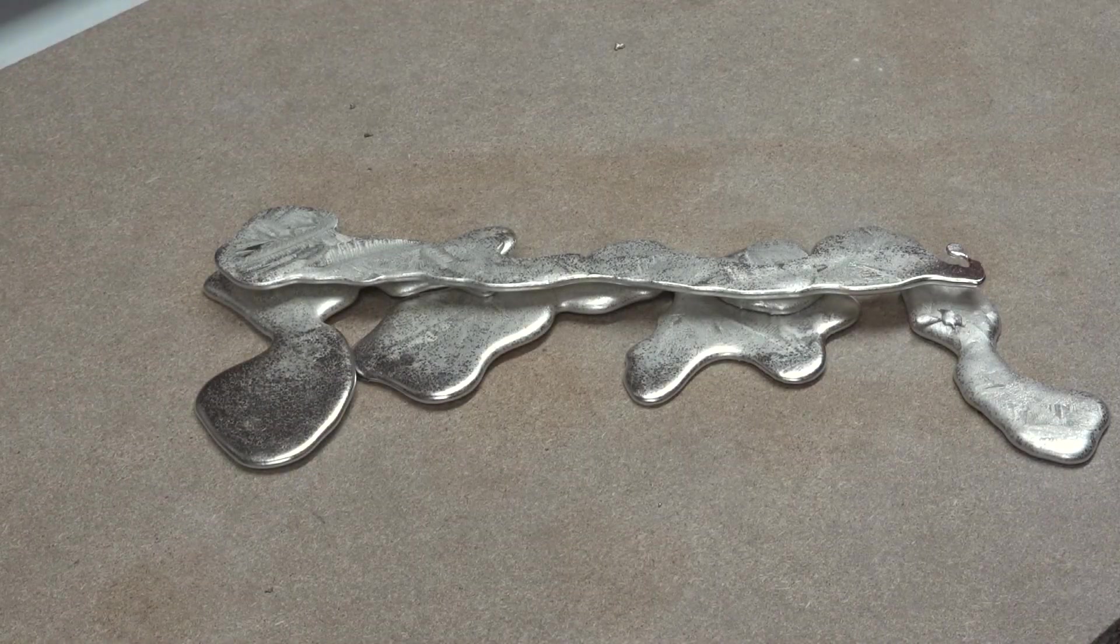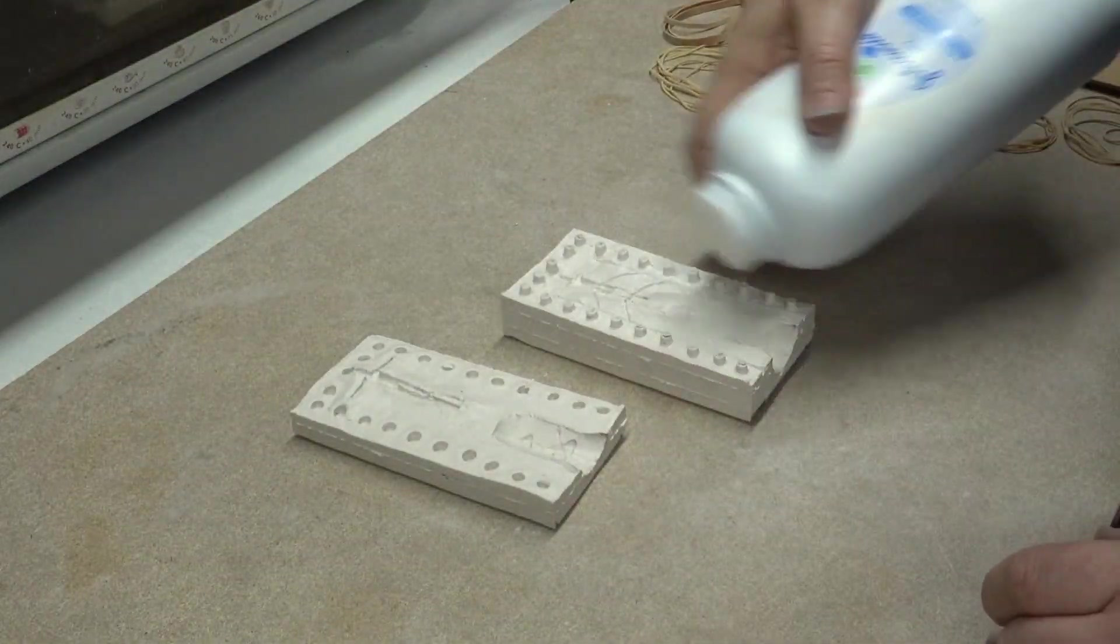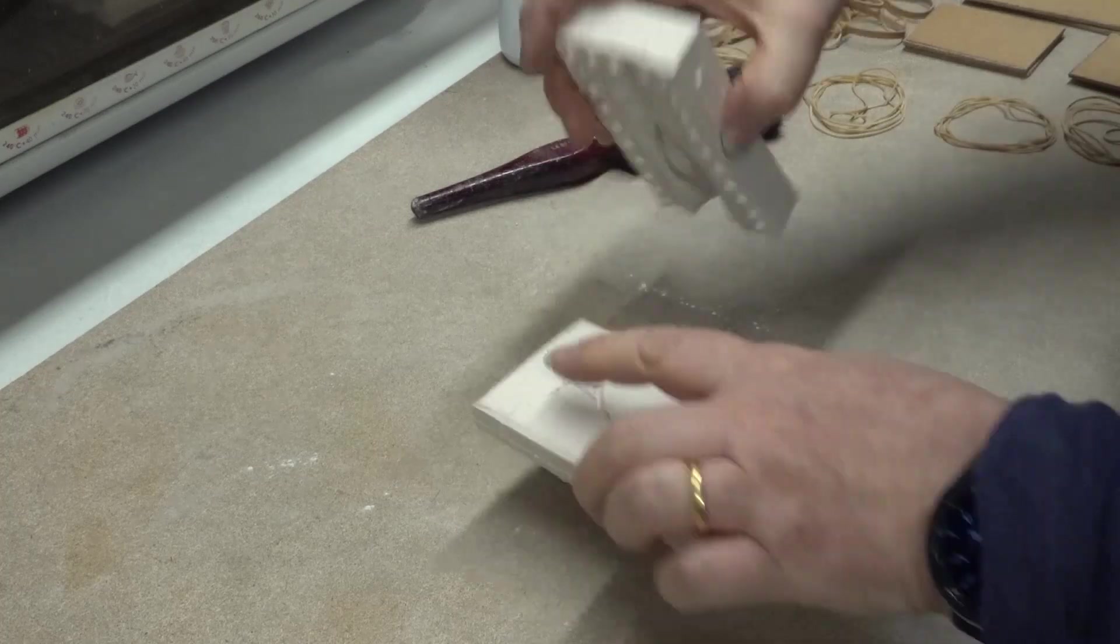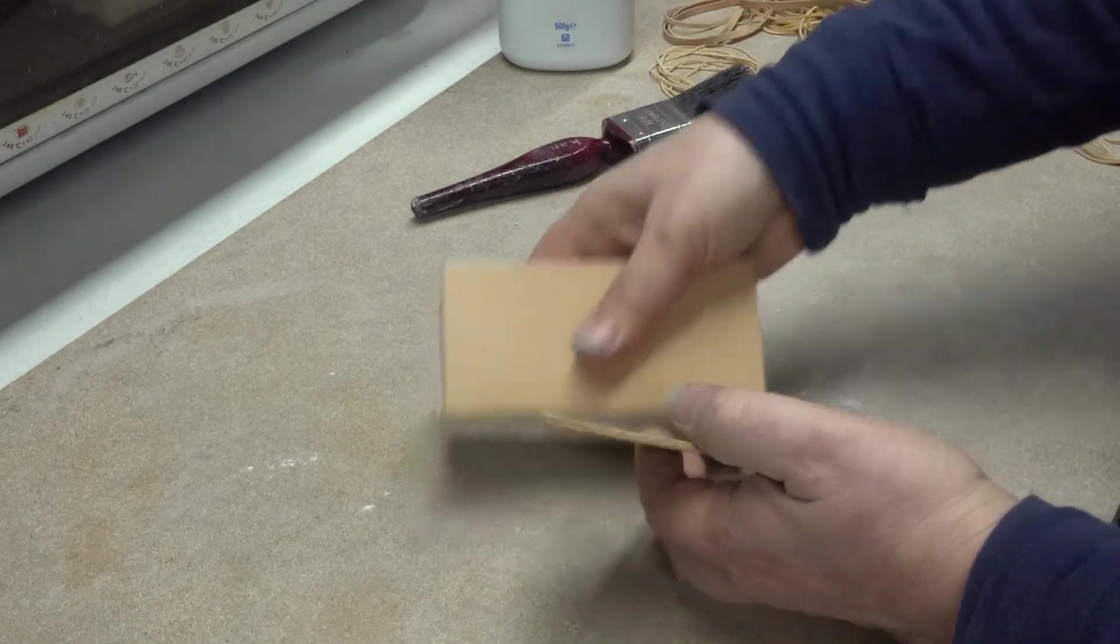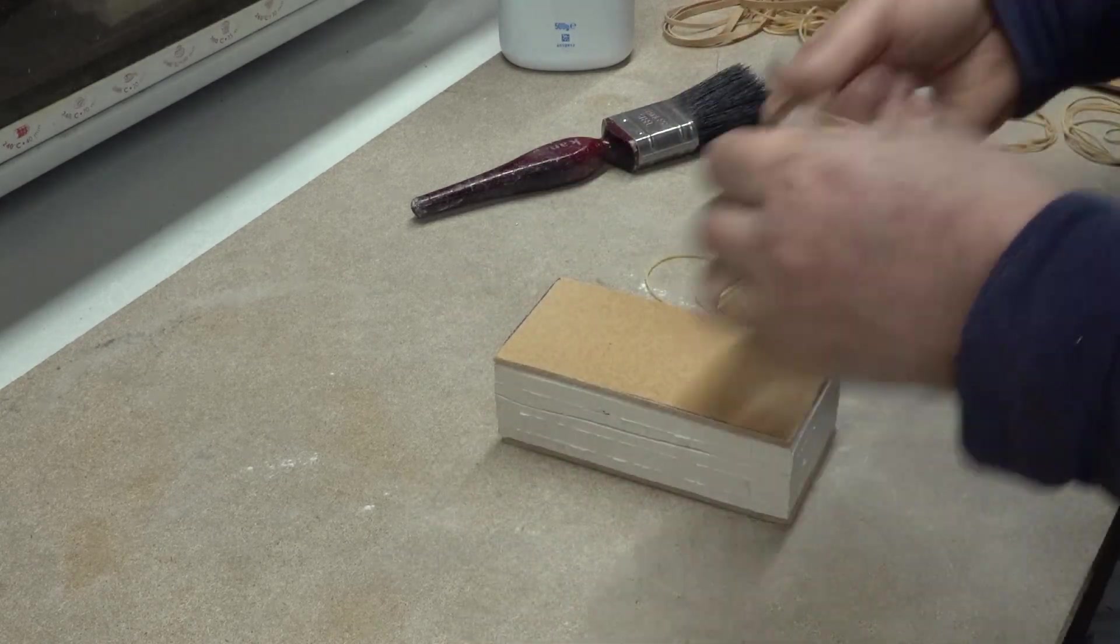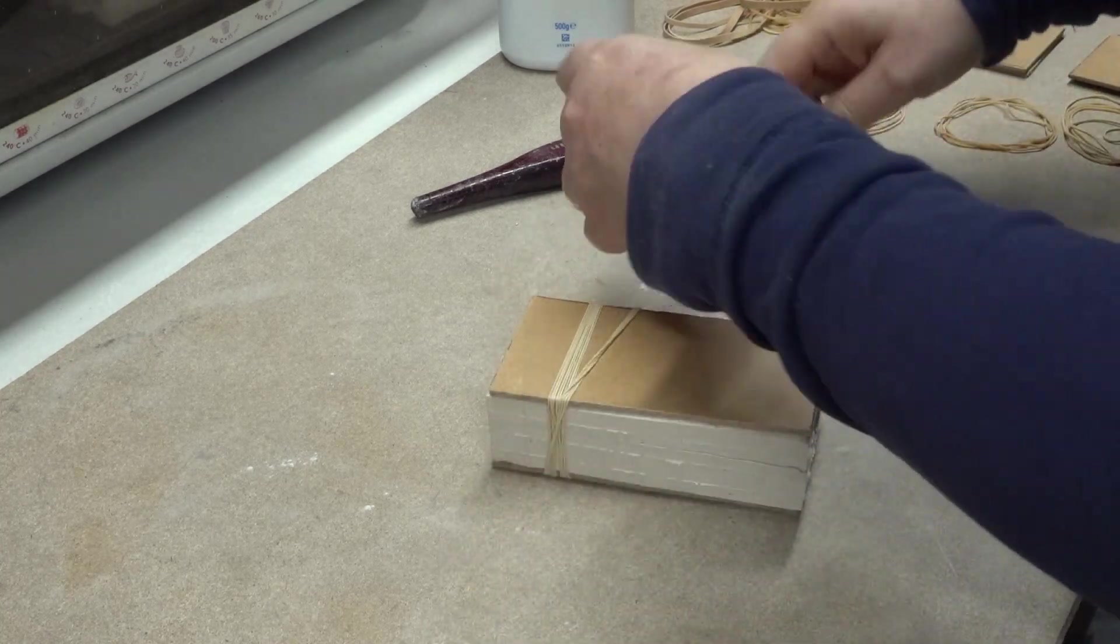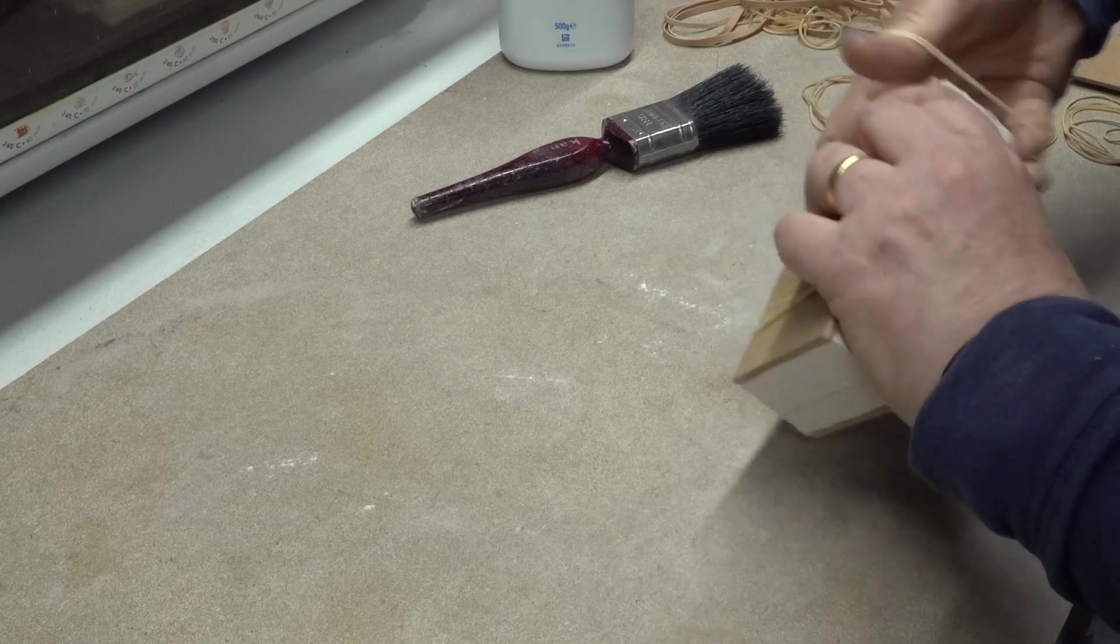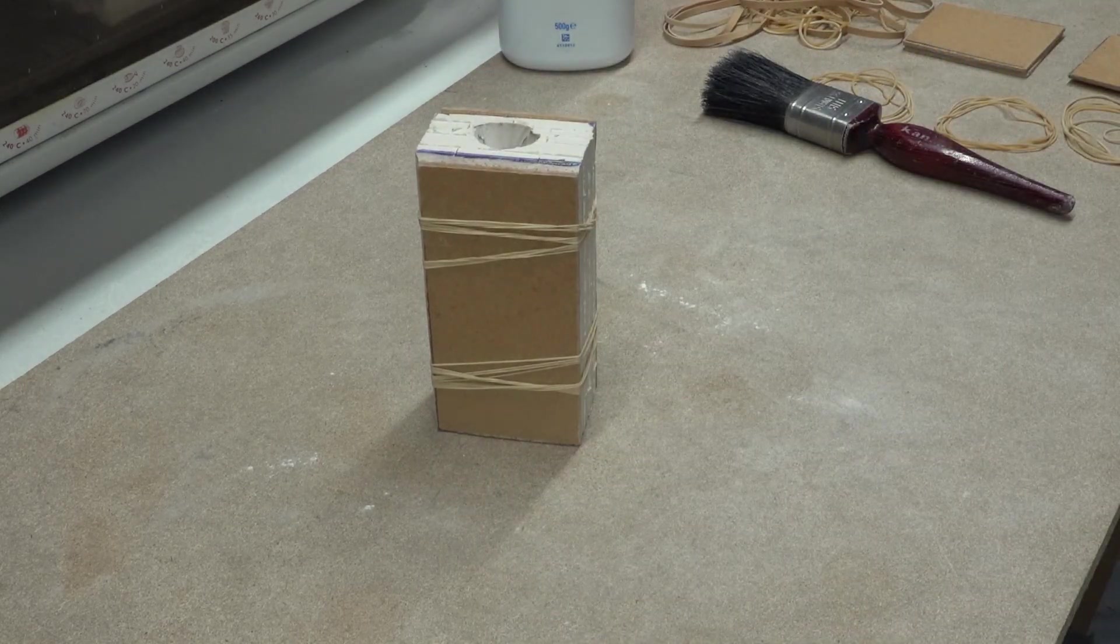Now that our moulds have heated up let's do some casting. The hot moulds are first given a dusting of talc and then placed between two pieces of hardboard. You could use plywood or any non-flammable rigid board. The elastic bands are then wrapped around the mould to hold it tight together without distorting the shape of the mould. It's important to work quickly but carefully as we need to maintain the mould temperature between castings.